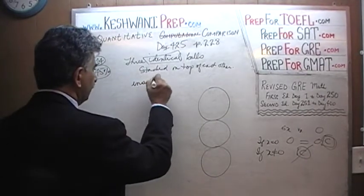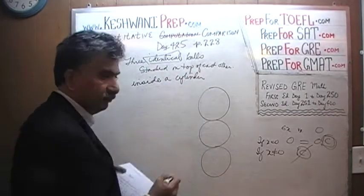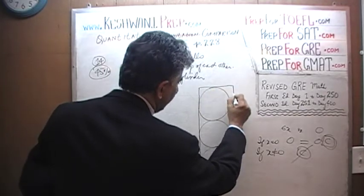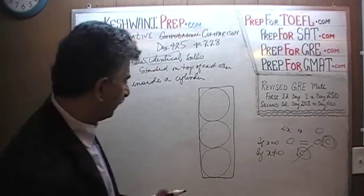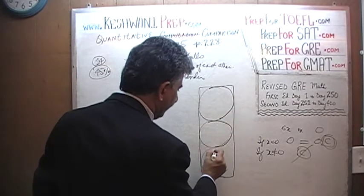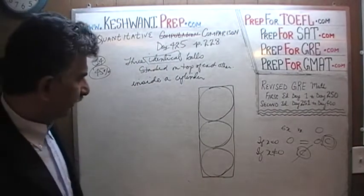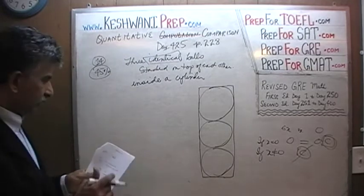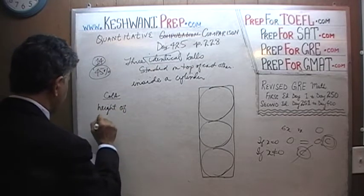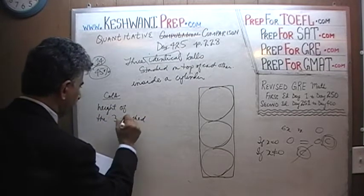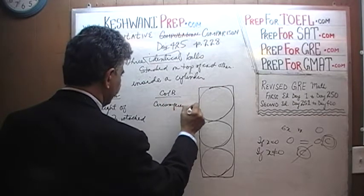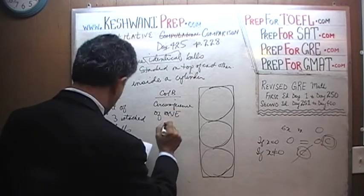The picture is given to us: three circles stacked on top of each other inside the cylinder — they fit exactly. Here is what they want you to compare. Column A: the height of the three stacked balls. Column B: the circumference of one of the balls. Pause and unpause the video and do it yourself.